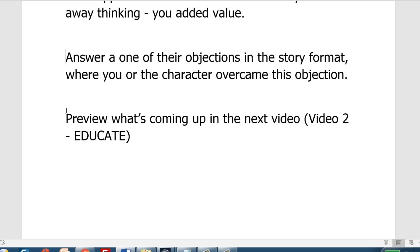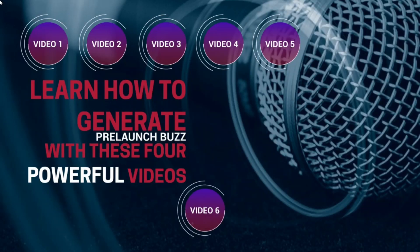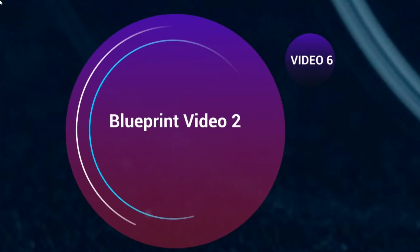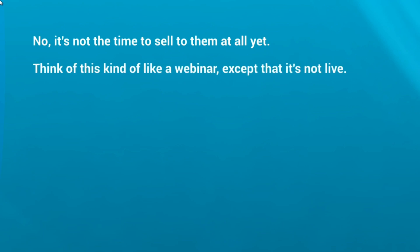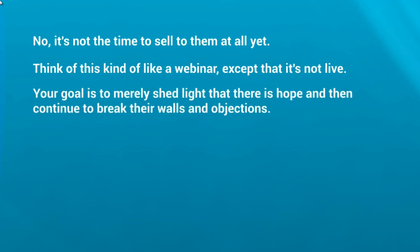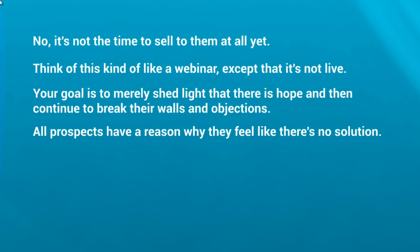Welcome back — this is video six, the blueprint for video two: educate. Now that your prospects see there is in fact hope, it's time to educate them. It's not time to sell them yet — think of this like a webinar except it's not live. You're going to give them really good information so they walk away wanting more. Your goal is to merely shed light that there is hope and continue to break their walls and objections. All prospects have a reason why they feel there is no solution — you need to figure that out.